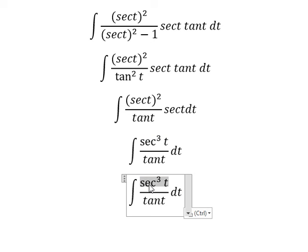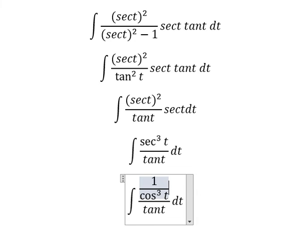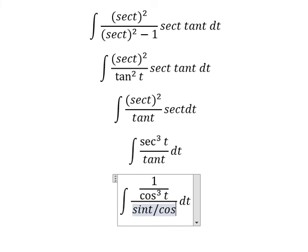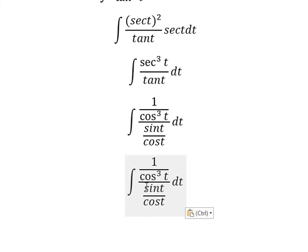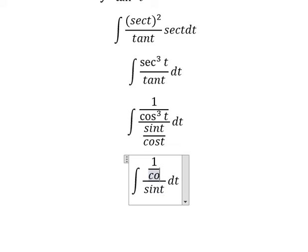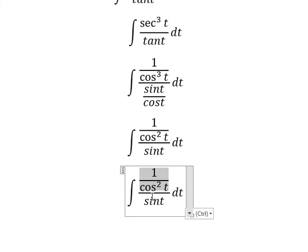We change this one into 1 over cosine t to the power of 3. This one we change for cosine t over sine t. We simplify cosine t. So this one will go to the denominator.